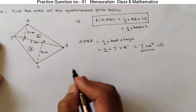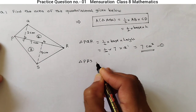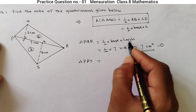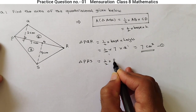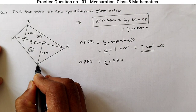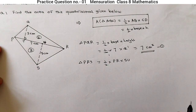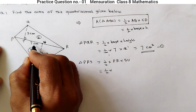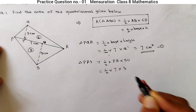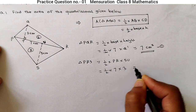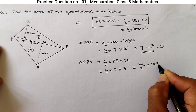We got the first part. Now the second part is triangle PRS. The formula is the same: base into height divided by 2. Base is PR, which is 1/2 into 7 cm, and the perpendicular height SU is 3 cm. So 1/2 into 7 into 3 equals 21 divided by 2, which is 10.5 cm².